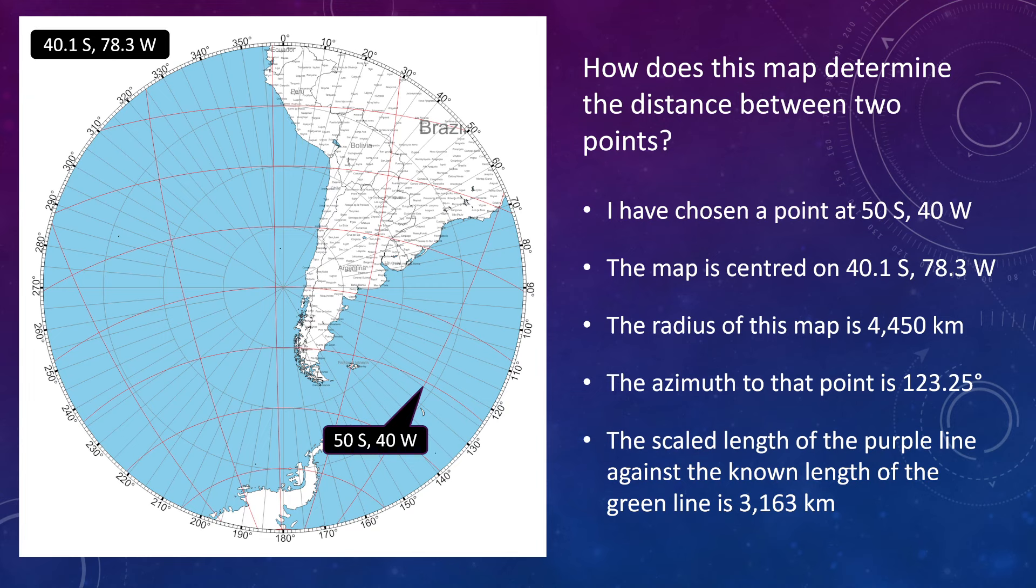Right, so as before, the map is centered on 40.1 south, 78.3 west. And the radius of the map is 4,450 kilometers. Now using the dimensions of these green and purple lines, I can work out that the azimuth of the point is 123.25 degrees. And by scaling the lengths, I can work out that this map is telling me that the point is 3,163 kilometers from the GP. You're quite welcome to do your own pixel counting, if you don't believe me. But remember, the question we're trying to answer is, on what map do you arrive at 50 degrees south, 40 degrees west, if you start at the GP and travel 3,163 kilometers at that azimuth?